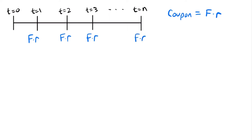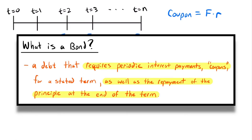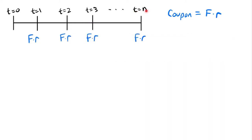Additionally, a bond not only requires periodic coupon payments but also the return of the amount borrowed — the redemption value — paid at the end of the term. So if the bond ends at time equals n, at that period we also need to pay back the redemption value C. We can add C to the payment made at time equals n. Those are all the payments made for a bond throughout its term.